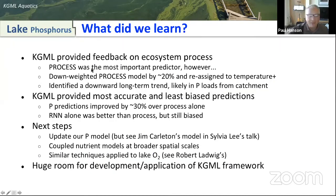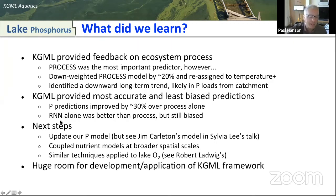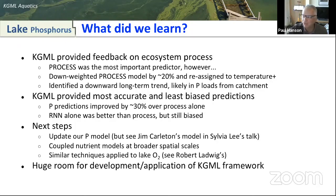So what did we learn? KGML provided feedback on ecosystem processes. The process model was the most important predictor for the KGML paradigm; however, it did downweight it by about 20 percent and reassigned some of the variance we thought should go to process into temperature — so we learned something about our model, that maybe we didn't have exactly the right model and could make some changes there. KGML was the most accurate in making predictions and gave us information about next steps. The final take-home point: we've learned a lot through collaborations with colleagues in computer science, and there's huge room for development and application of the KGML framework. It's a really exciting time to be in the aquatic sciences.